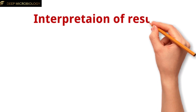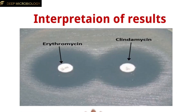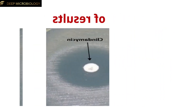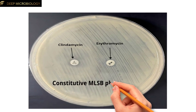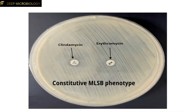If both erythromycin and clindamycin are sensitive, this suggests that the bacterial strain lacks inducible resistance to clindamycin. If both are resistant, this is suggestive of the constitutive MLSB phenotype, meaning the bacteria have a stable or constant resistance mechanism to macrolides like erythromycin, lincosamides like clindamycin, and streptogramin B, often due to the ERM gene encoding methylase.